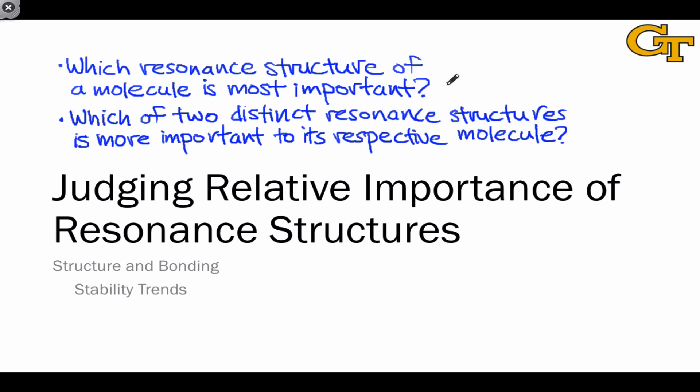As an example of the first situation, we might ask, for example, for the formamide molecule, which resonance structure is most important to formamide? The one in which all atoms are neutral, or the one in which oxygen bears a negative charge and nitrogen bears a positive charge?